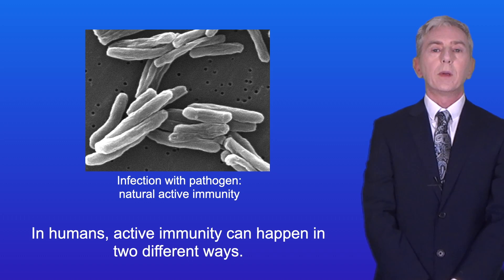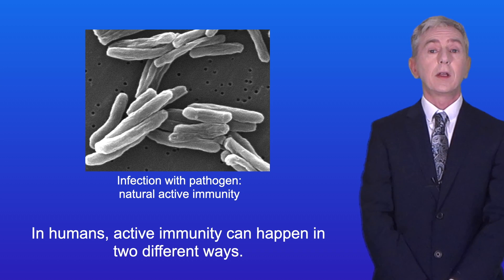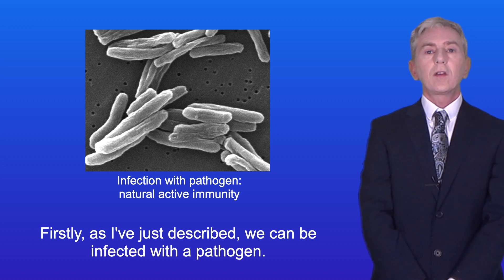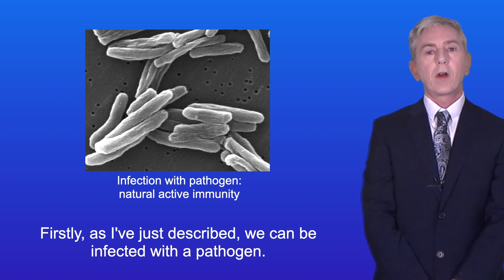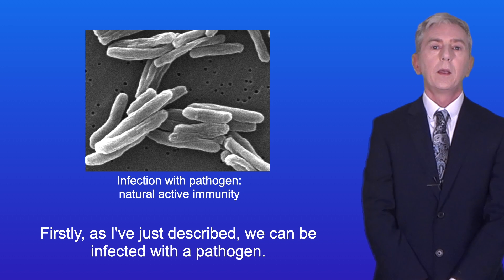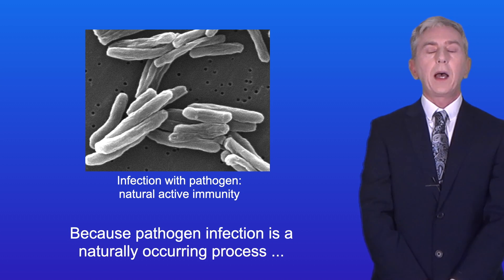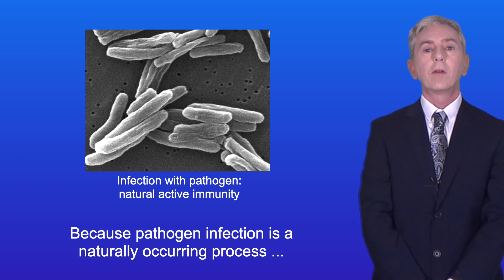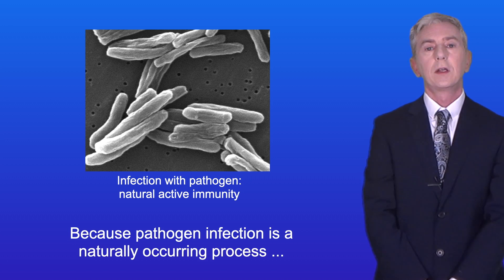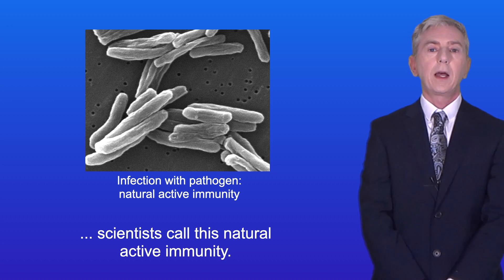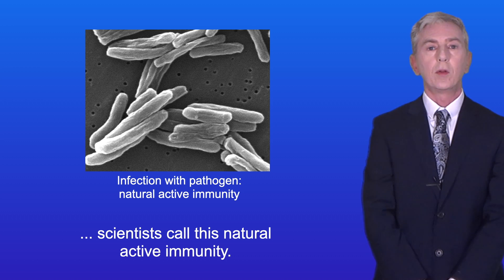In humans, active immunity can happen in two different ways. Firstly, as I've just described, we can be infected with a pathogen. Because pathogen infection is a naturally occurring process, scientists call this natural active immunity.